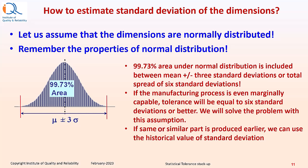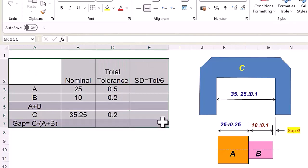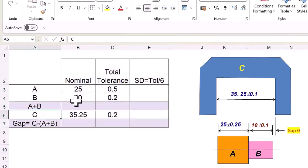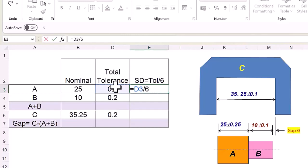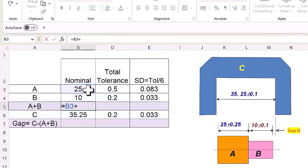Now, we will use Microsoft Excel to perform calculations. We make a table of the dimensions as shown. It shows the values of A, B, and C in terms of nominal value and the total tolerance. The standard deviation of A will be one-sixth of the total tolerance of A, that is equal to 0.5 divided by 6, and we can copy this formula for B and C as well. We can also calculate the nominal values. A plus B will be addition of the nominal values of A and B, so that equals 25 plus 10, and the gap will be C minus A plus B. The nominal equals 0.25.